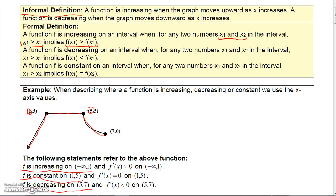In other words, as x gets bigger, the y's get bigger. However, if the function is decreasing, then if we have x₁ and x₂ in the interval, when x₁ is bigger than x₂, then f(x₁), which would be y₁, would actually be less than y₂. So as the x's get bigger, the y's get smaller. And for the function to be constant on an interval, as x₁ gets bigger than x₂, the y values stay the same.